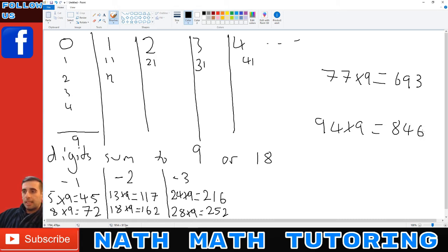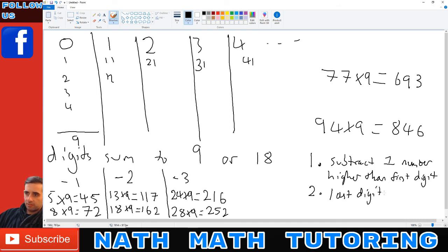So the first pattern, so the first step was to summarize is subtract one digit, what to say, one number higher than first digit. Okay, so that'll give you the first digits, the first two digits or first depending on how high the number is. And then we just, the last digit adds to 9 or 18.